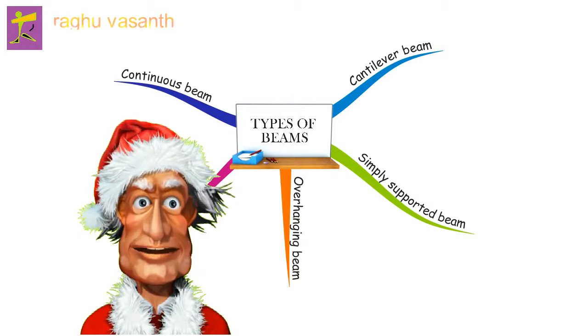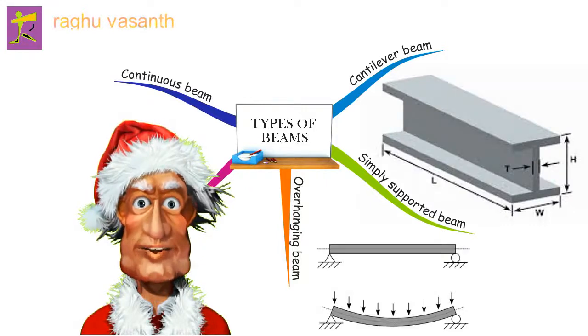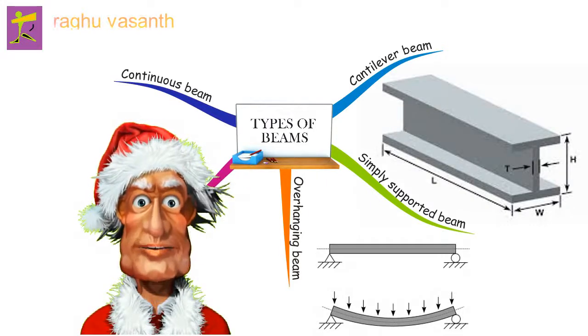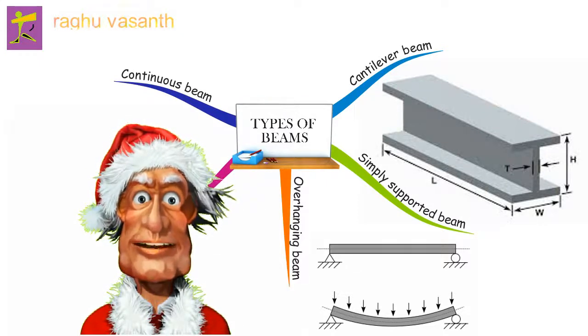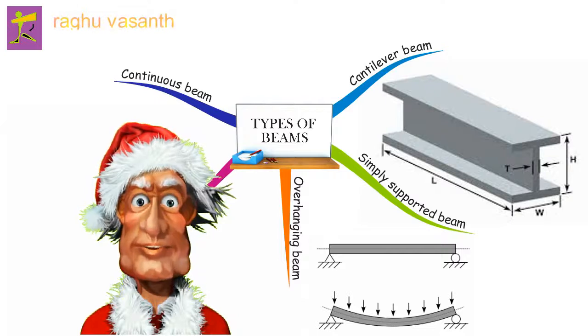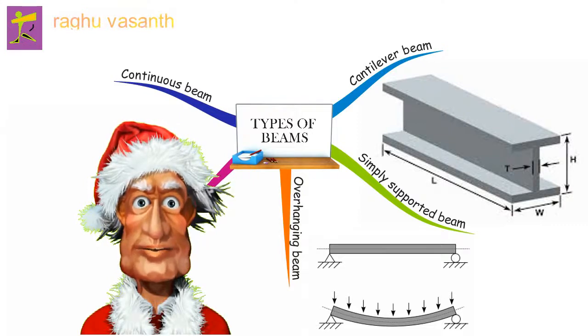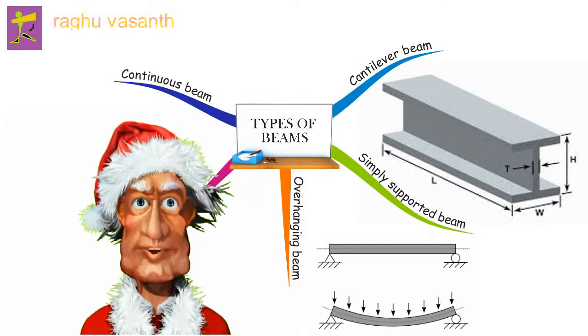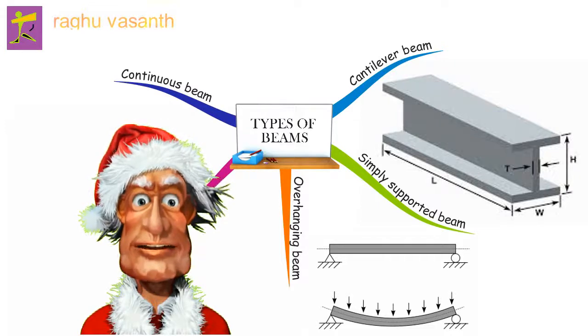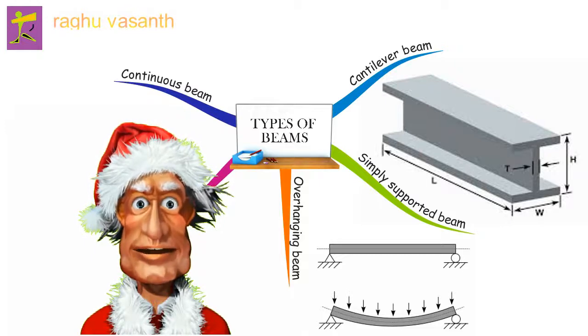Hello students, today we are going to look at types of beams. A beam is a structural element that primarily resists loads applied laterally to the beam's axis. Its mode of deflection is primarily by bending. The loads applied to the beam result in reaction forces at the beam's support points. The total effect of all forces acting on the beam is to produce shear forces and bending moments within the beam, which in turn induce internal stresses, strains, and deflections. Beams are characterized by their manner of support, profile, shape of cross section, length, and material.